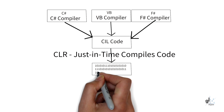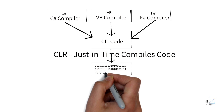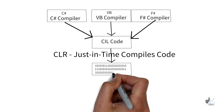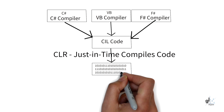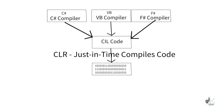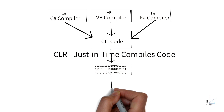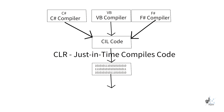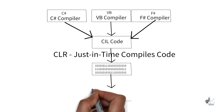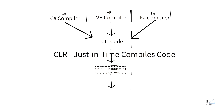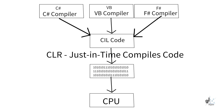The relevant machine language code can now be understood by the CPU of the target computer, which could be a machine running Windows, macOS, or Linux. So a single codebase written in C# can be used to run on multiple devices and platforms — write once, run anywhere.